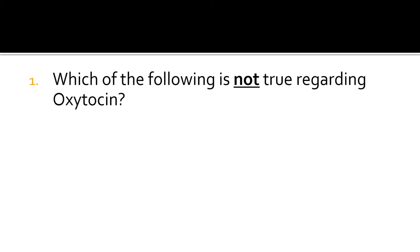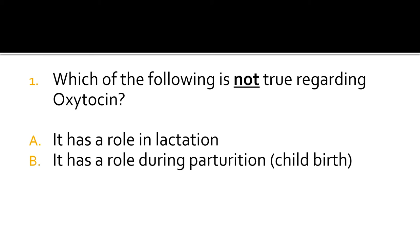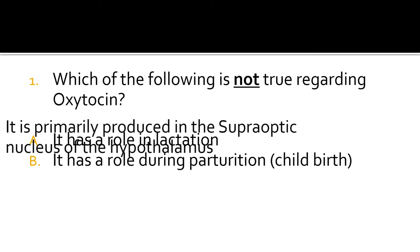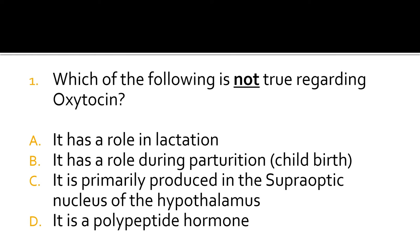Question 1. Which of the following is not true regarding oxytocin? It has a role in lactation. It has a role during parturition or childbirth. It is primarily produced in the supra-optic nucleus of the hypothalamus. It is a polypeptide hormone.